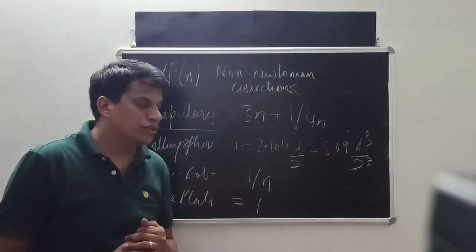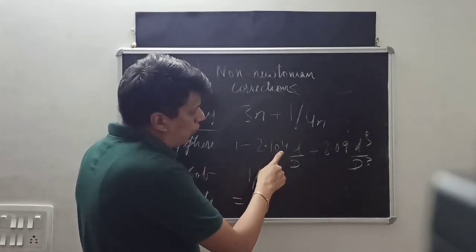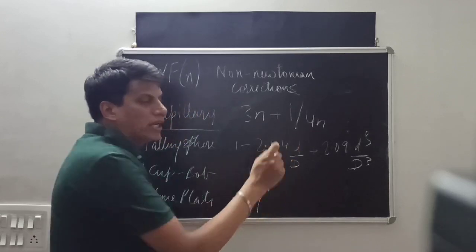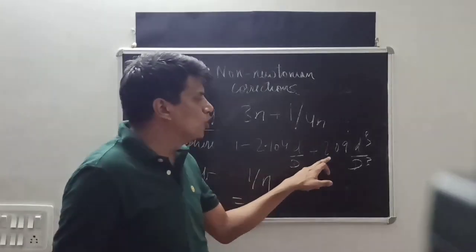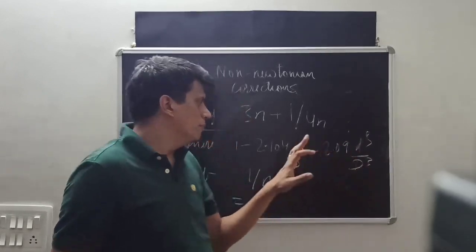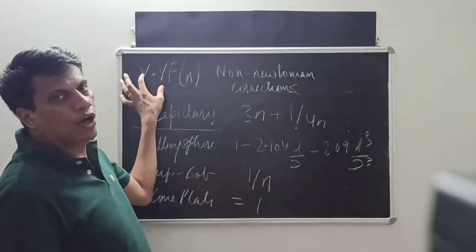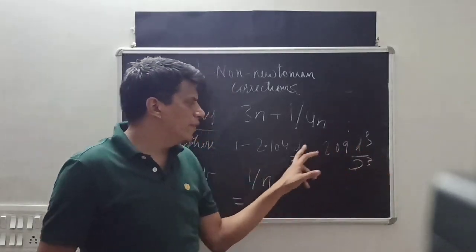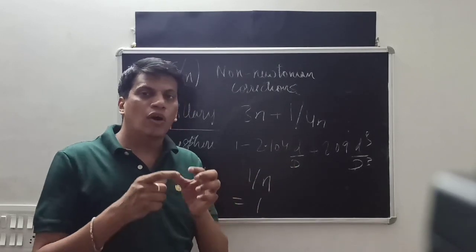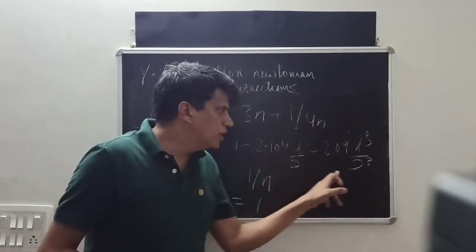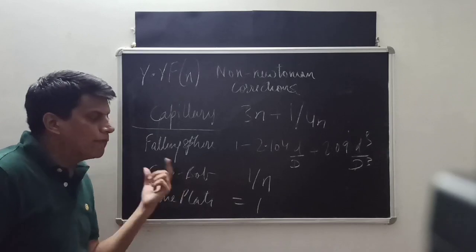For falling sphere viscometers, the correction factor is: 1 minus 2.104 times (d/D) plus 2.09 times (d³/D³), where d is the diameter of the sphere and D is the diameter of the burette or container. After completing the experiment and determining viscosity, measure the sphere diameter using a vernier caliper, measure the container diameter, substitute the values, and multiply by your viscosity to obtain the corrected viscosity.